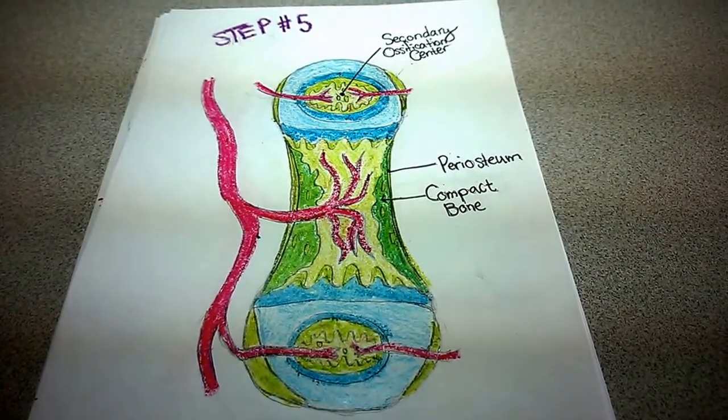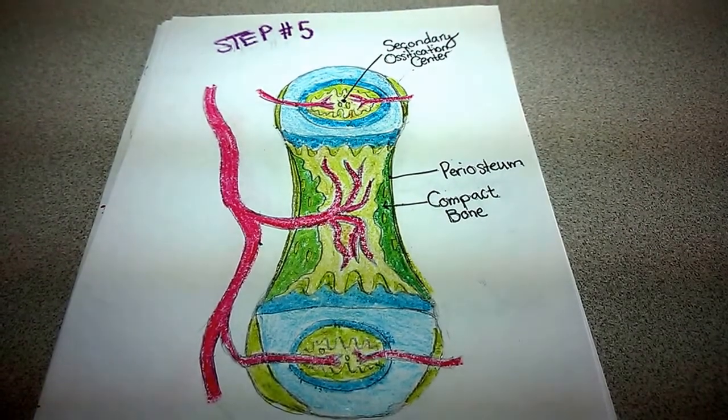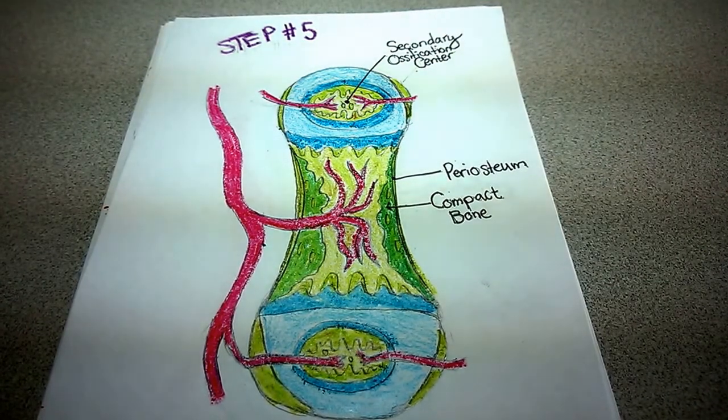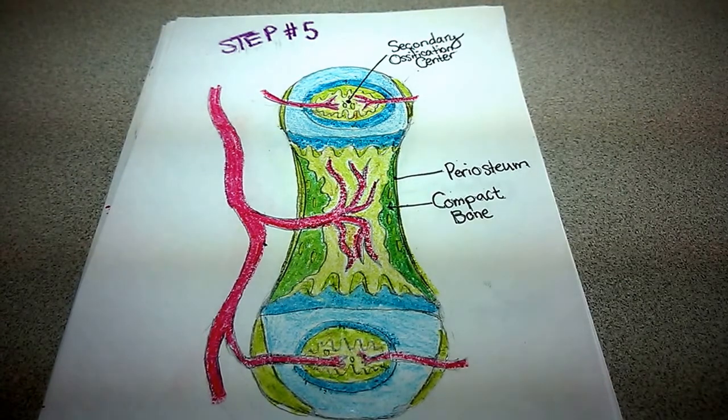Step five: Capillaries extend into the epiphyses. The blood brings fibroblasts which differentiate into osteoblasts. They get busy and start converting cartilage to bone from the two secondary ossification centers located in the middle of each epiphysis.